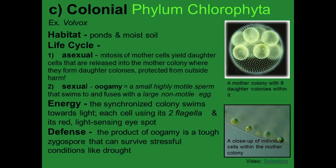A colonial Chlorophyta example is Volvox, found in ponds and moist soil. Asexually, mitosis of mother cells yields daughter cells released into the mother colony, forming daughter colonies protected by the outer layer — a mother colony can have eight daughter colonies within it. Sexually, they have oogamy: highly motile sperm swims to fuse with a large non-motile egg. The synchronized colony swims toward light using two flagella and a red light-sensing eye spot per cell. The product of oogamy is a tough zygospore that survives stressful conditions like drought.